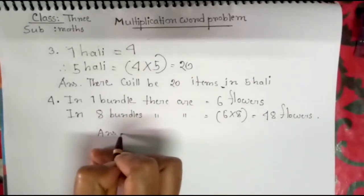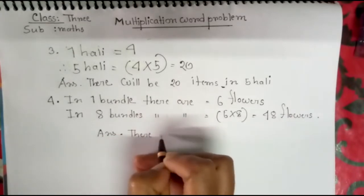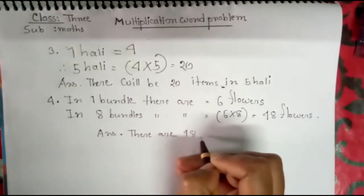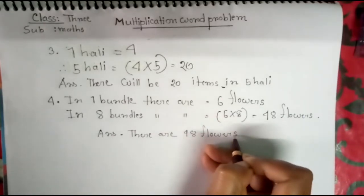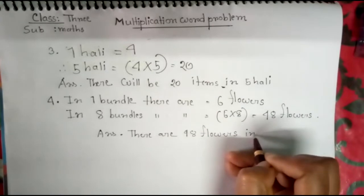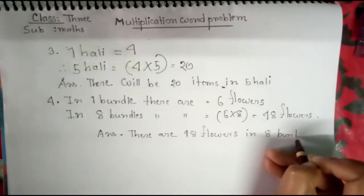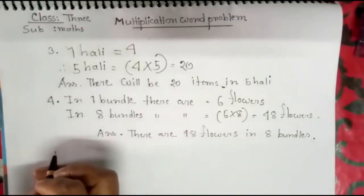Answer: There are forty-eight flowers in eight bundles. Let's solve number five.